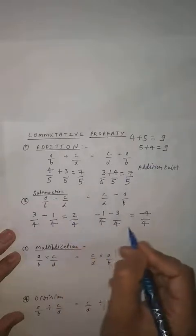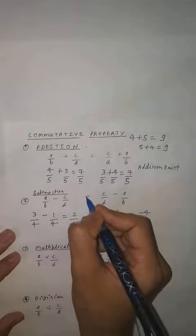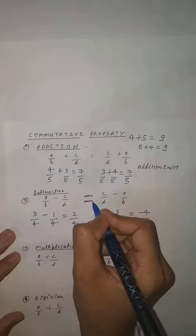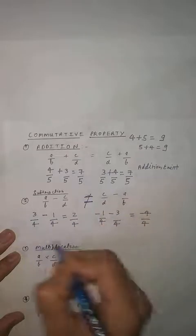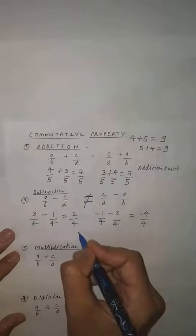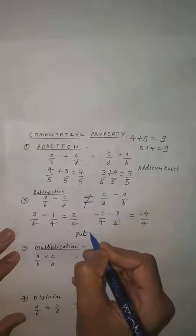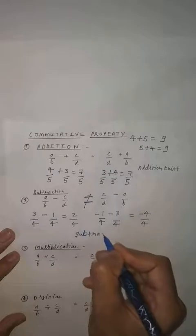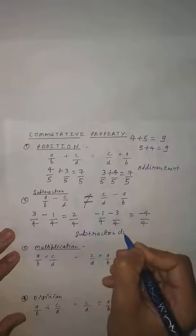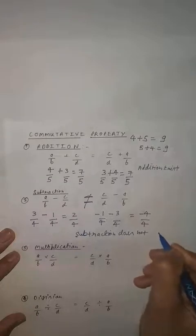So they are unequal. So in rational number, in commutative property, subtraction does not exist.